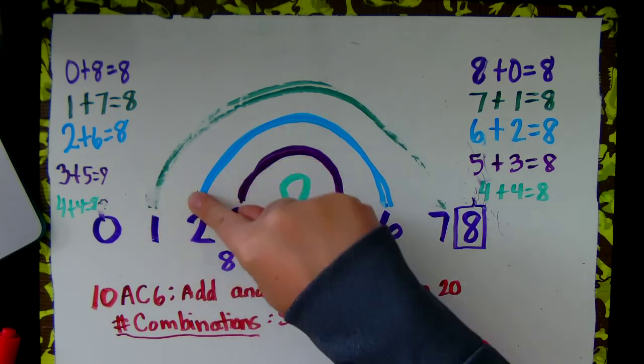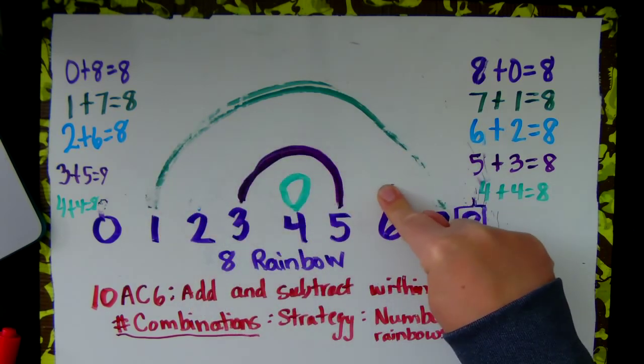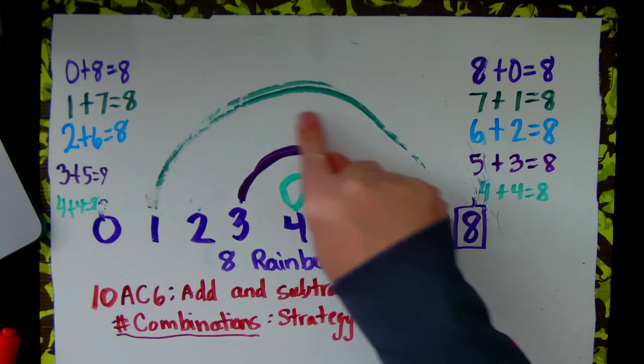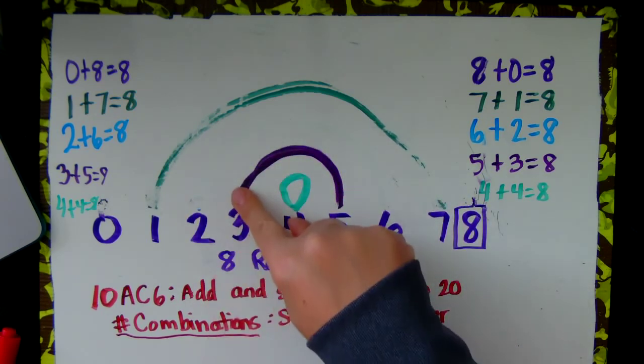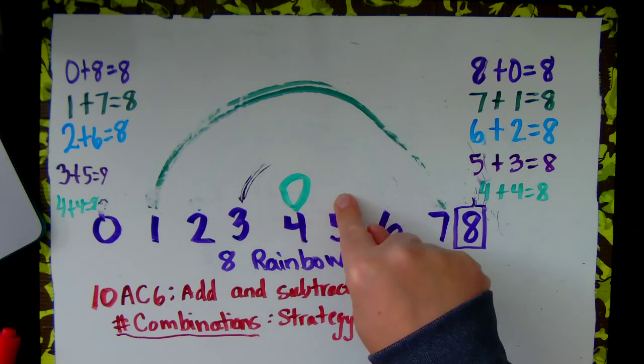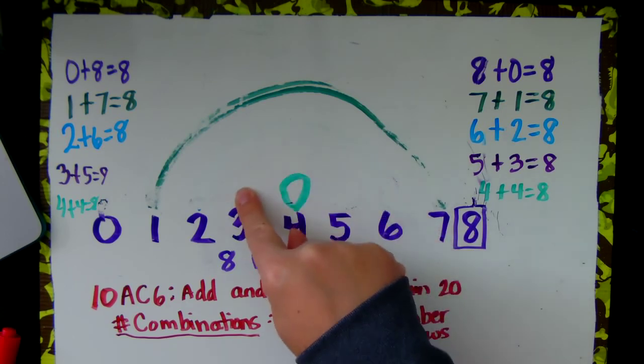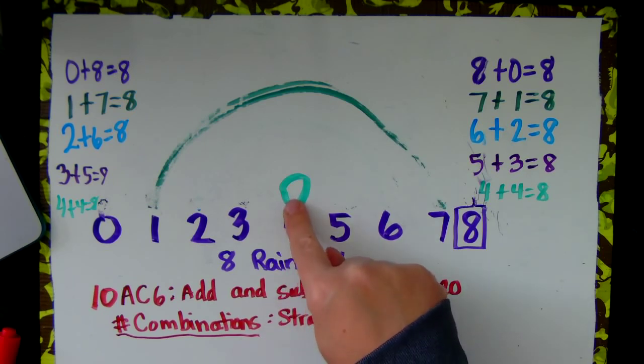2 plus 6 make 8, 6 plus 2 make 8, 3 and 5 make 8, 5 and 3 make 8, 4 plus 4 make 8, 4 plus 4 make 8.